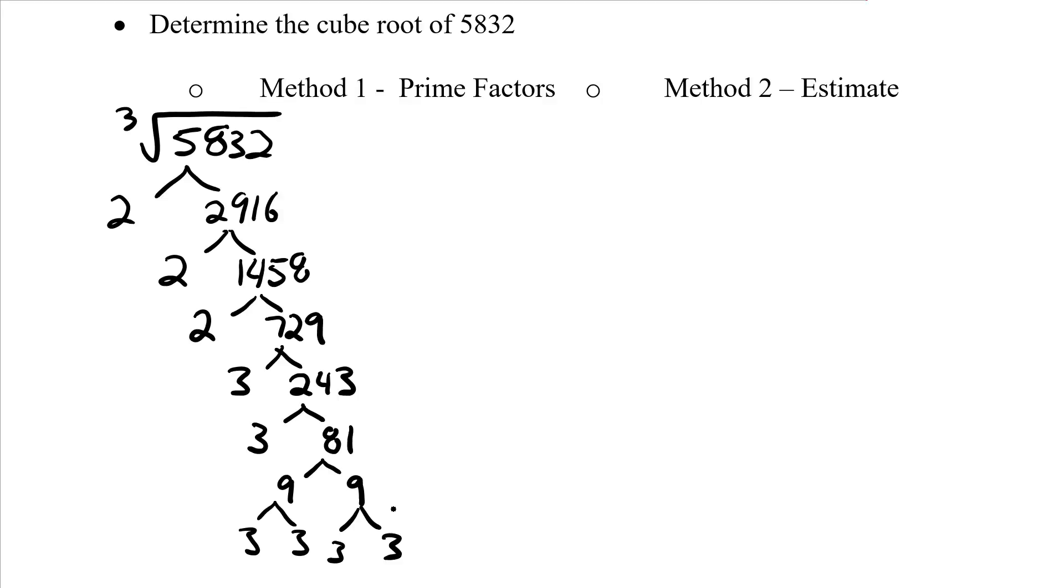Write this out as a product of my primes, 3 twos and 6 threes. Now, because I'm looking for the cube root, I'm not going to put this in groups of 2, but rather groups of 3. So there's 1, there's 1, and there's 1. So this becomes 2 times 3 times 3, and 2 times 3 times 3 is 18. So the cube root of 5,832 is 18.